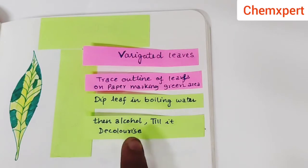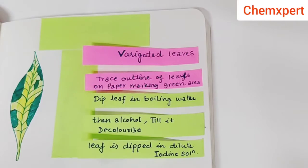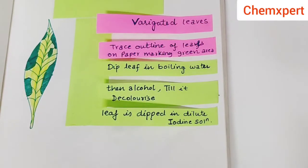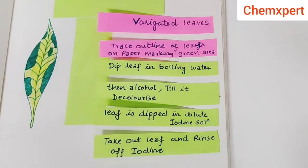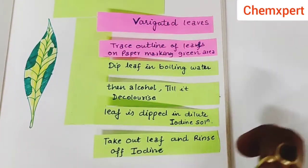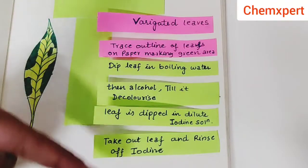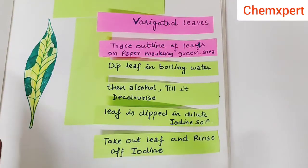The next important step is to dip the leaf in dilute iodine solution. Then repeat the process — take out the leaf and rinse off the iodine solution. These are the sequence of steps to be followed in this experiment.